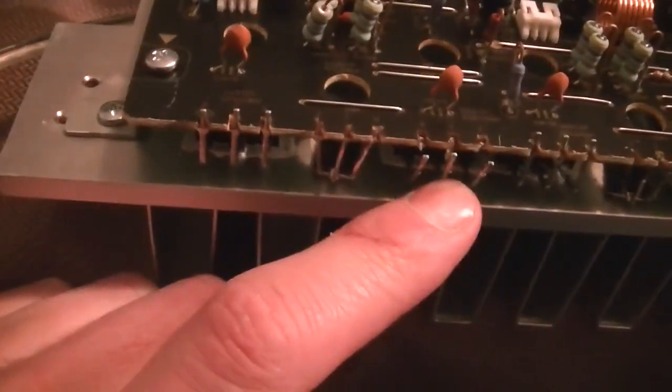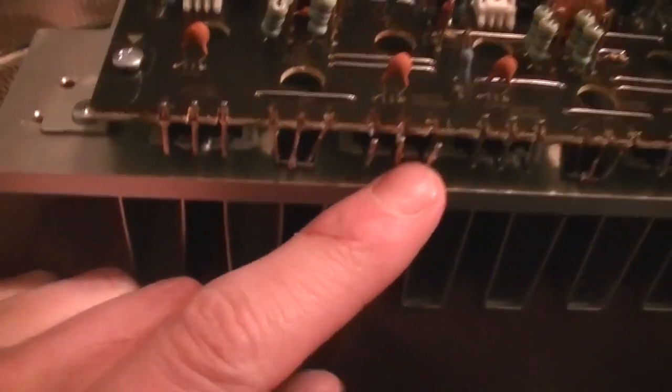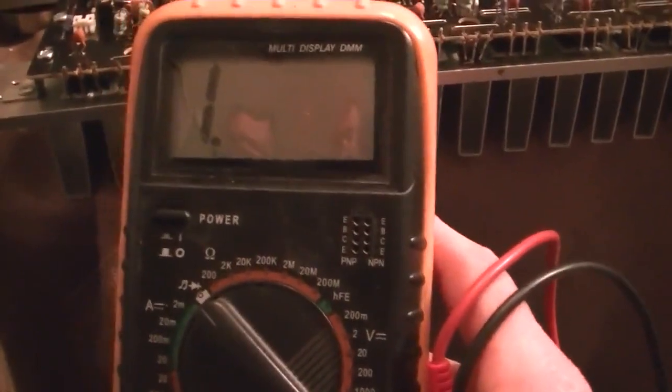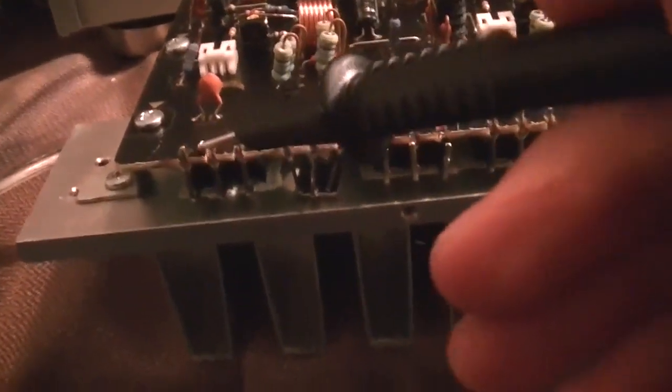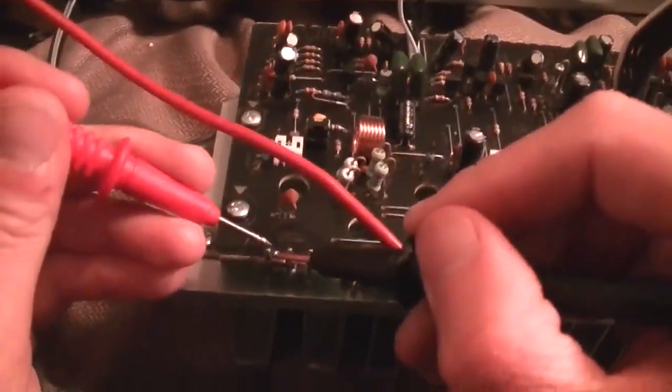I have a shorted MOSFET on speaker A right channel. And what I did in order to determine if any of these MOSFETs were shorted out or whatever was I put my multimeter in the continuity test position. And I just ran it across the leads.